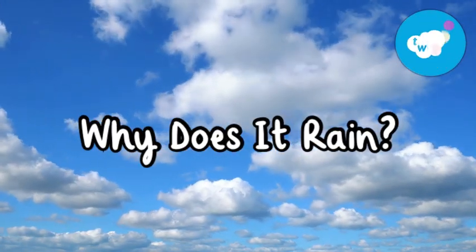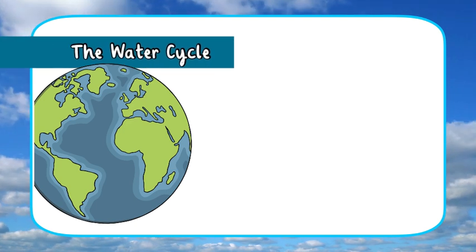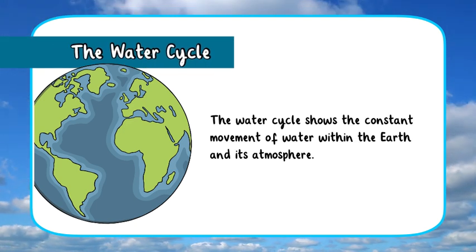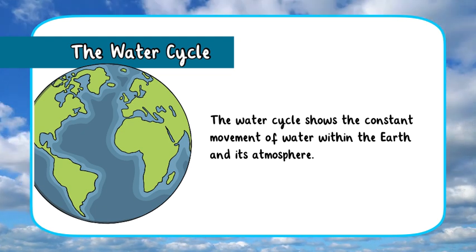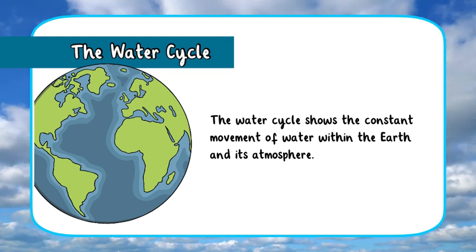Why does it rain? It's all to do with the water cycle. The water cycle shows the constant movement of water within the earth and its atmosphere.